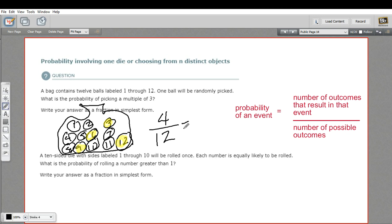So the probability of picking a multiple of 3 is 4 over 12. However, we can simplify this fraction. Both of these can be divided by 4. 4 divided by 4 is 1, 12 divided by 4 is 3. So it's a 1 in 3 chance, or a probability of 1 third, of picking a multiple of 3.